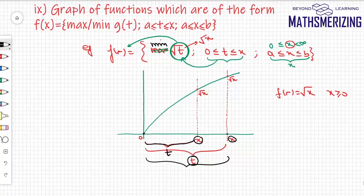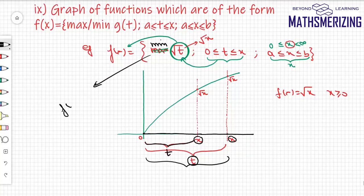This means the function is a constant function with value 0 for all x ∈ [0, ∞). So in this case the answer is f(x) = 0 when x ≥ 0.